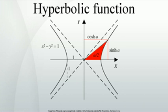The hyperbolic functions may be defined in terms of the legs of a right triangle covering this sector. In complex analysis, the hyperbolic functions arise as the imaginary parts of sine and cosine.